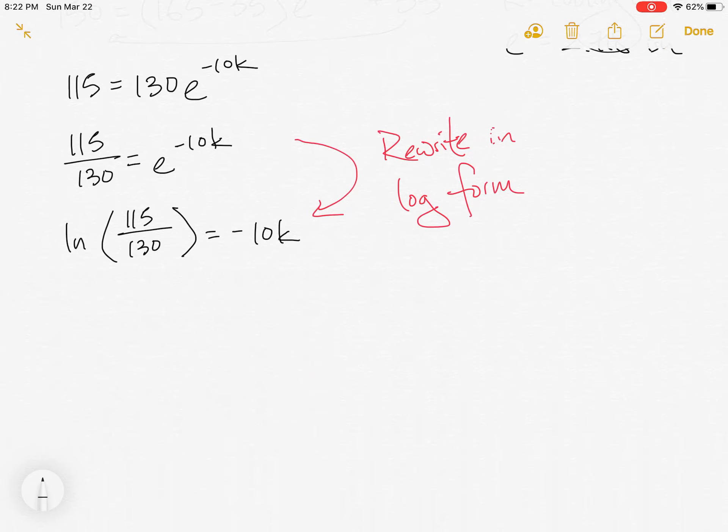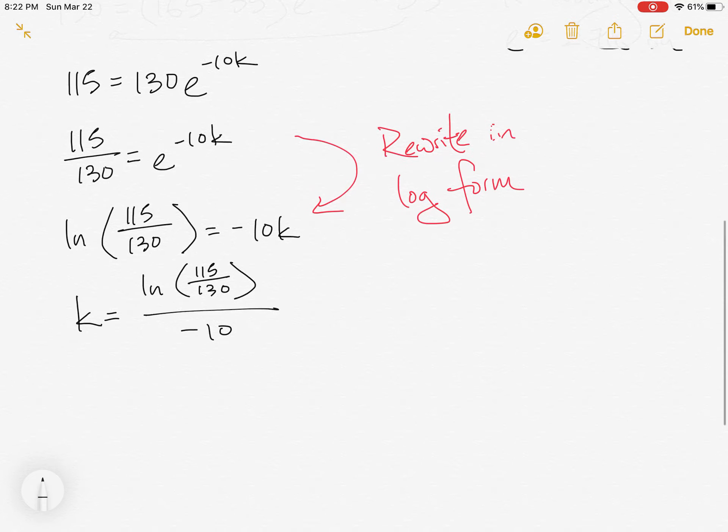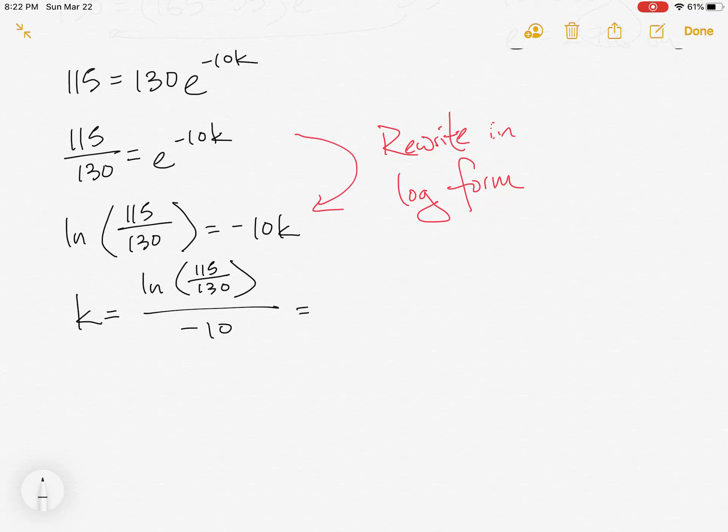All right, so our last step to find k then is we're going to take this big fraction 115 over 130, and we're going to divide it by negative 10. And when we type that all into the calculator, we should get 0.0123.